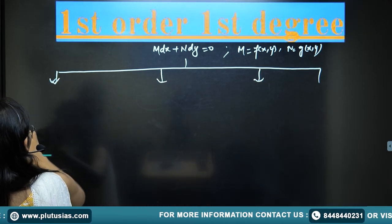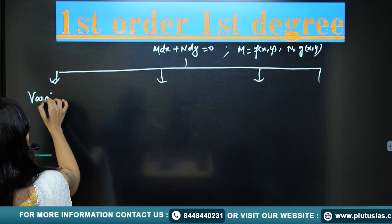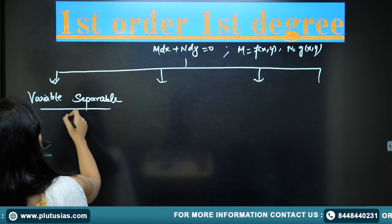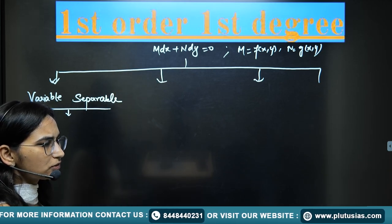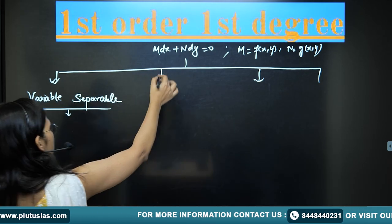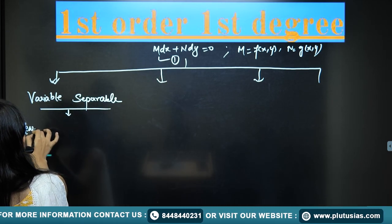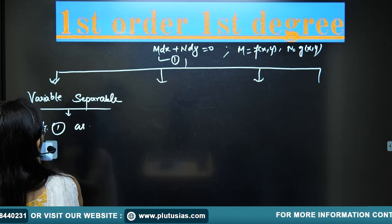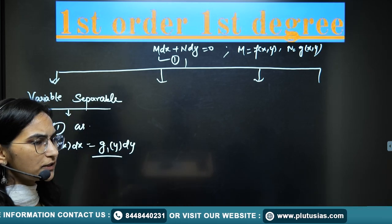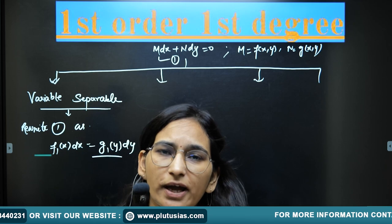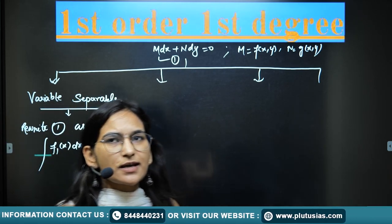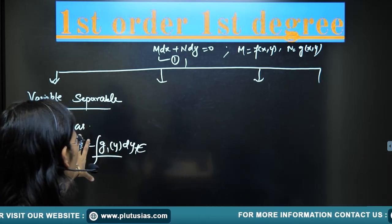The first method is variable separable. Under this method you can segregate the terms of x towards dx and terms of y towards dy. If it is possible to write equation 1 as f₁(x) dx + g₁(y) dy, then it is solved by the variable separable method — just integrate and add a constant c.